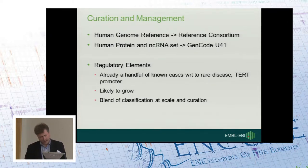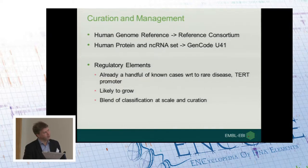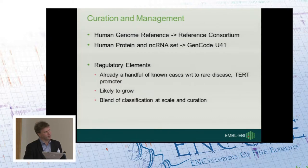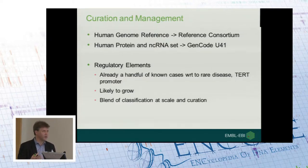It doesn't end after cataloging and classifying — you have to curate. The human genome reference is in a long-term but not-yet-ended curation mode. The human protein and ncRNA set — this is the U41 grant with GENCODE — and I think we're getting close to the point where regulatory elements will go to that. There are a handful of known cases: classically, the SOX, PAX6 mutations and Sonic Hedgehog mutations. The TERT promoter in cancer would be another established scenario where we really understand the relationship between a variant and disease-causing behavior. But there are many more we've got to get to.